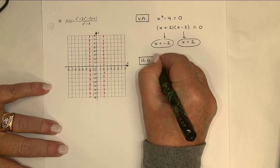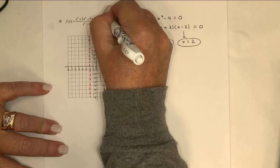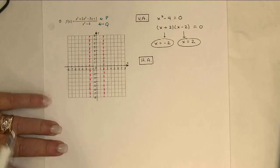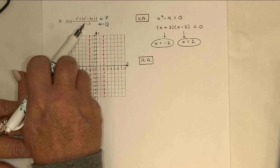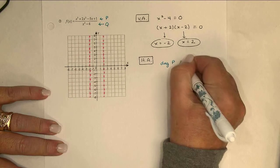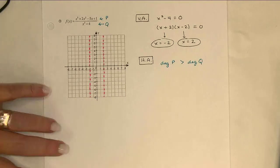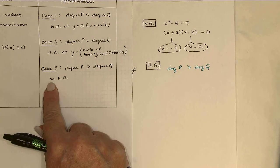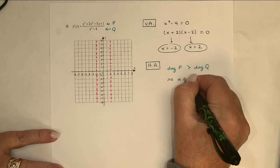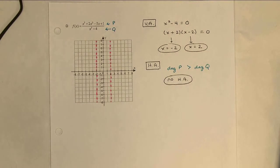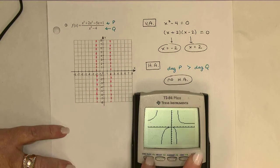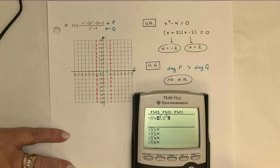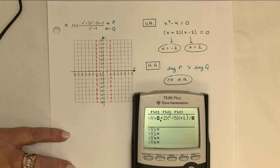Horizontal asymptotes. If I think again of the top as being the polynomial P and the bottom as being Q, this time the degree of P, 3, is larger than the degree of Q, which is only 2. Because of that, this is case 3, and I have no horizontal asymptotes. So I've got everything I can get by hand as far as asymptotes are concerned. I'm going to go ahead and put this in the calculator so we can see what the graph looks like to finish off. And I've still got that negative 8 to 8, and I'll leave it for now.